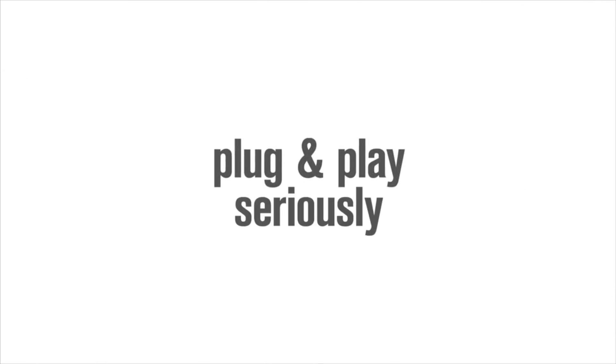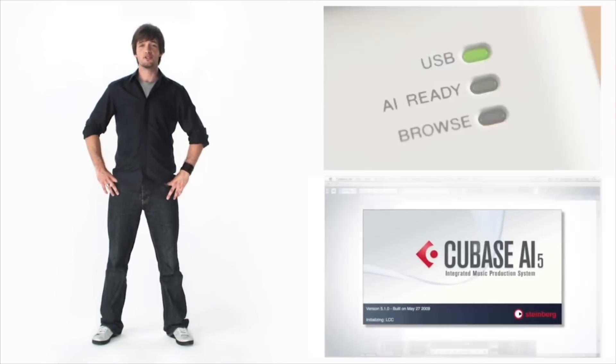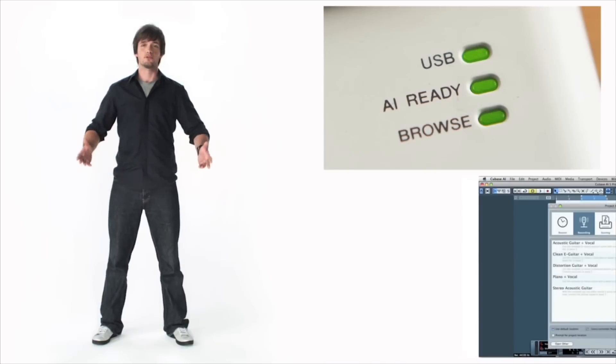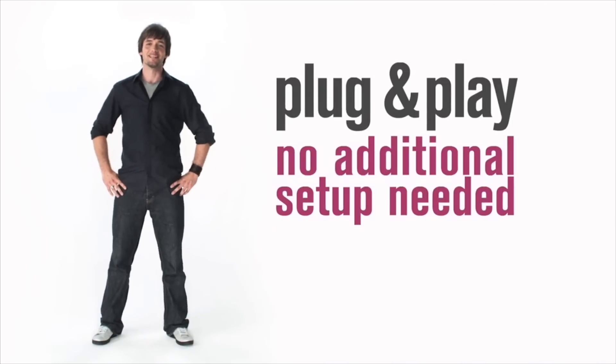Let's have a look at some of its features. CI2 is totally plug-and-play. Just plug in the USB cable and start Cubase AI5. Immediately, the CI2 gives you feedback that it's connected to Cubase. You're ready. No additional setup is needed.